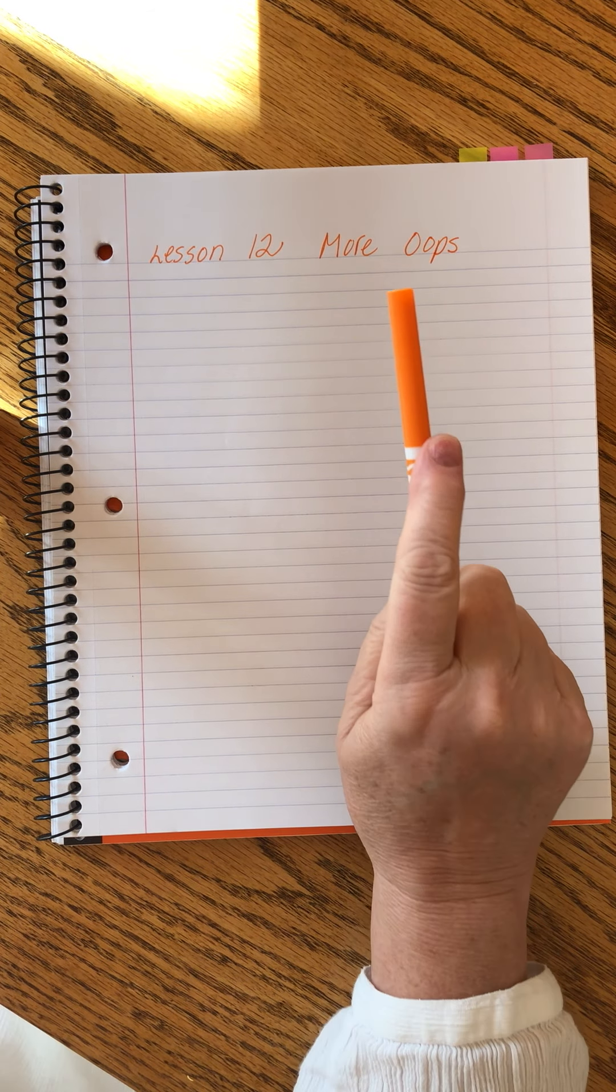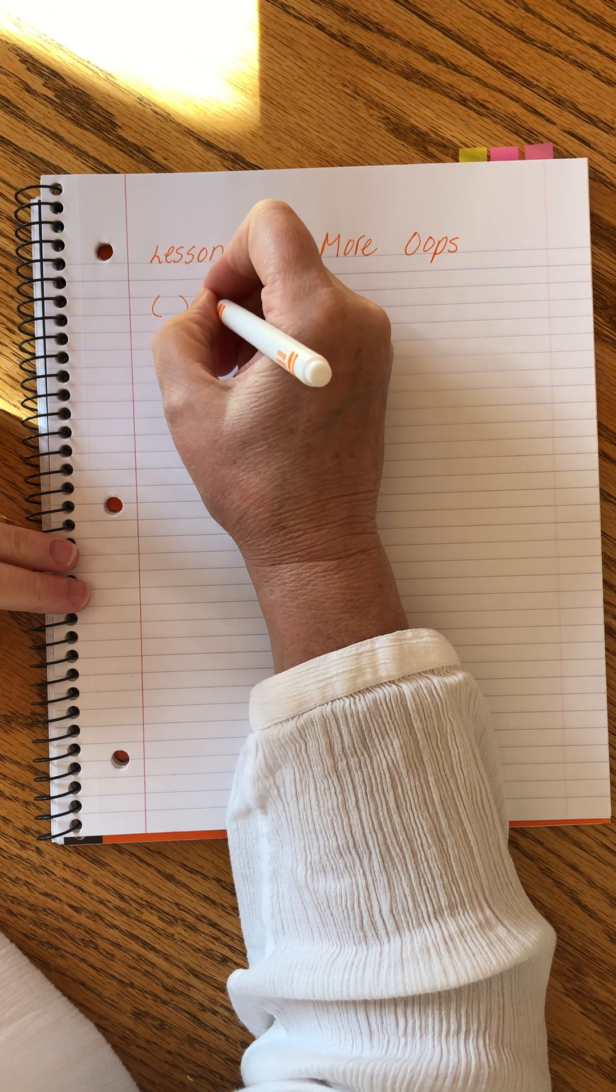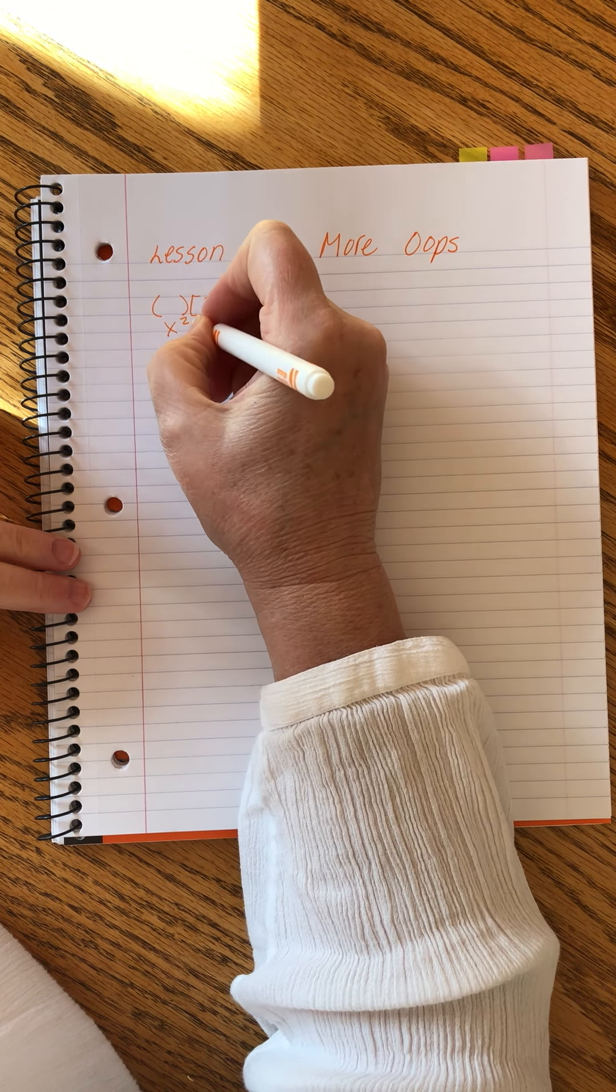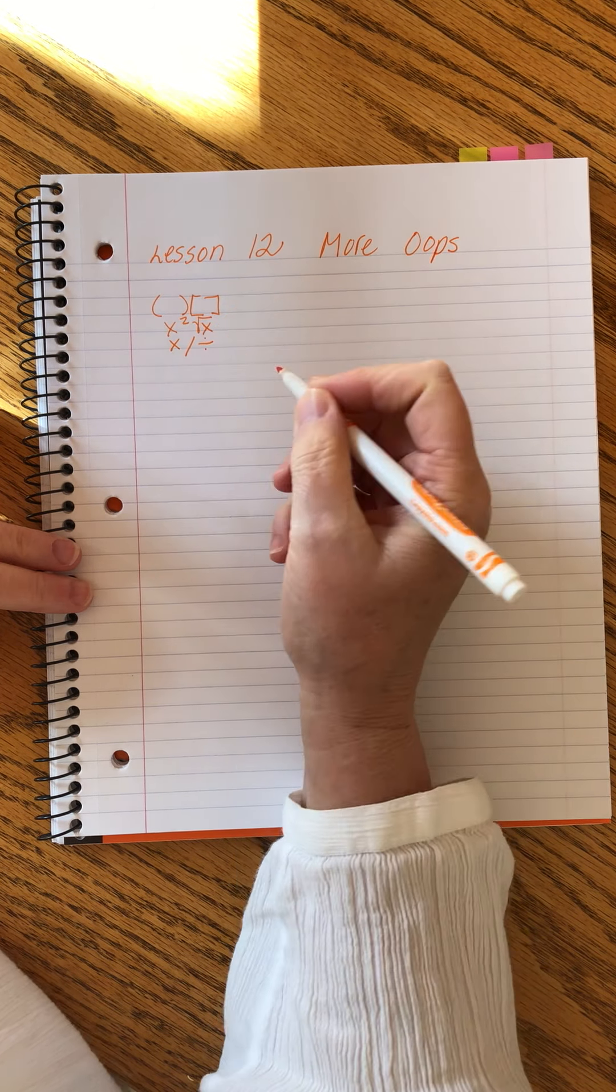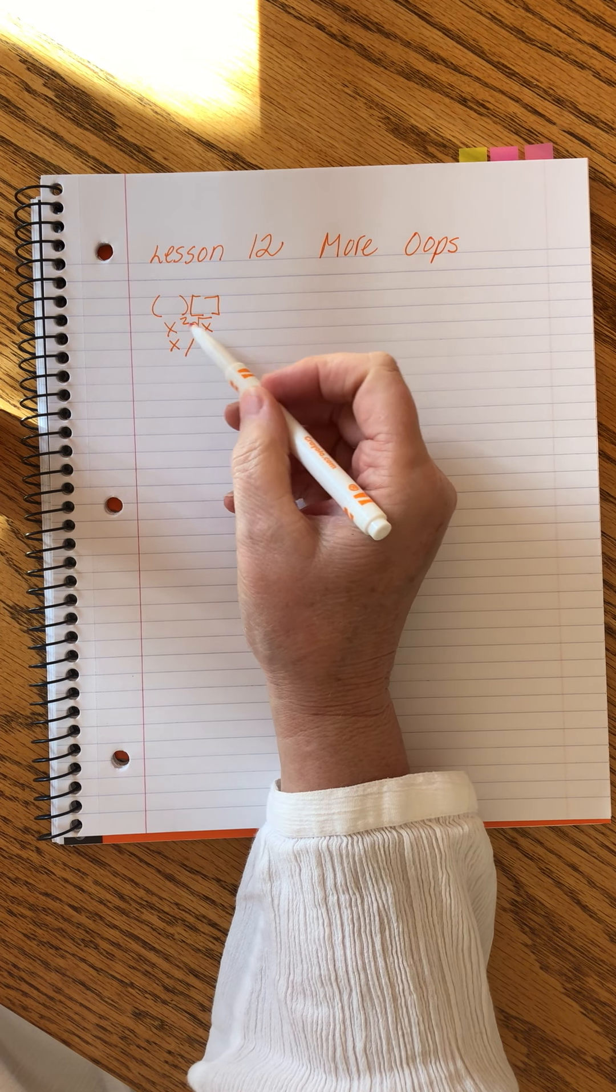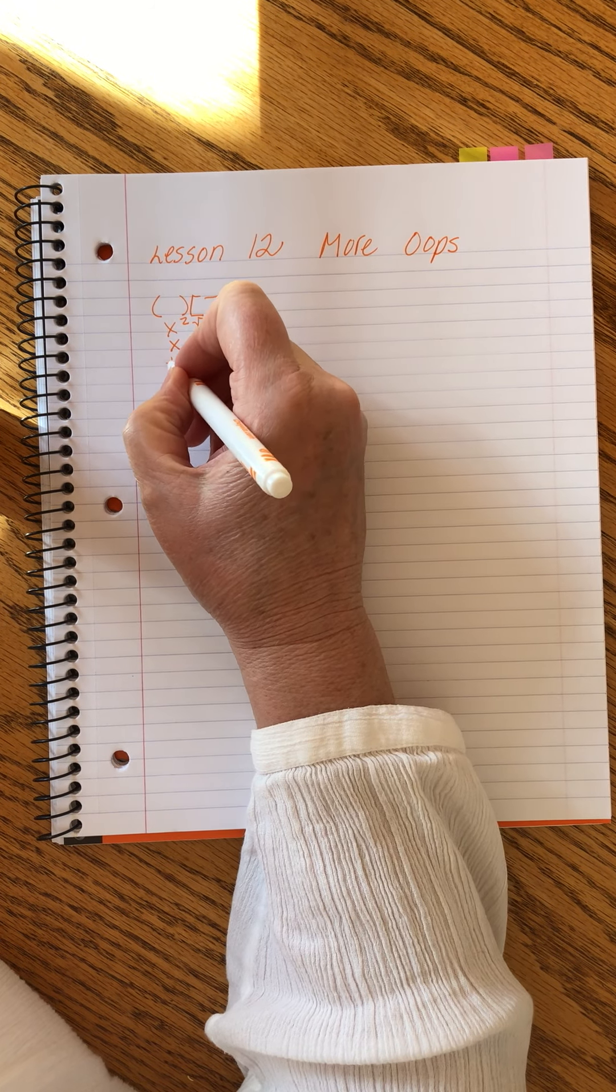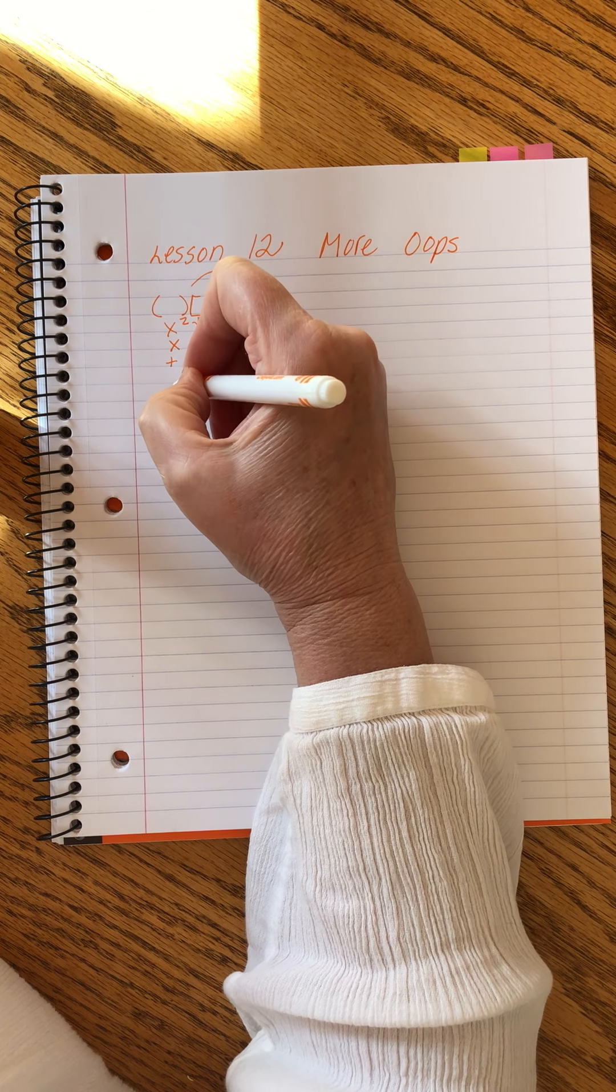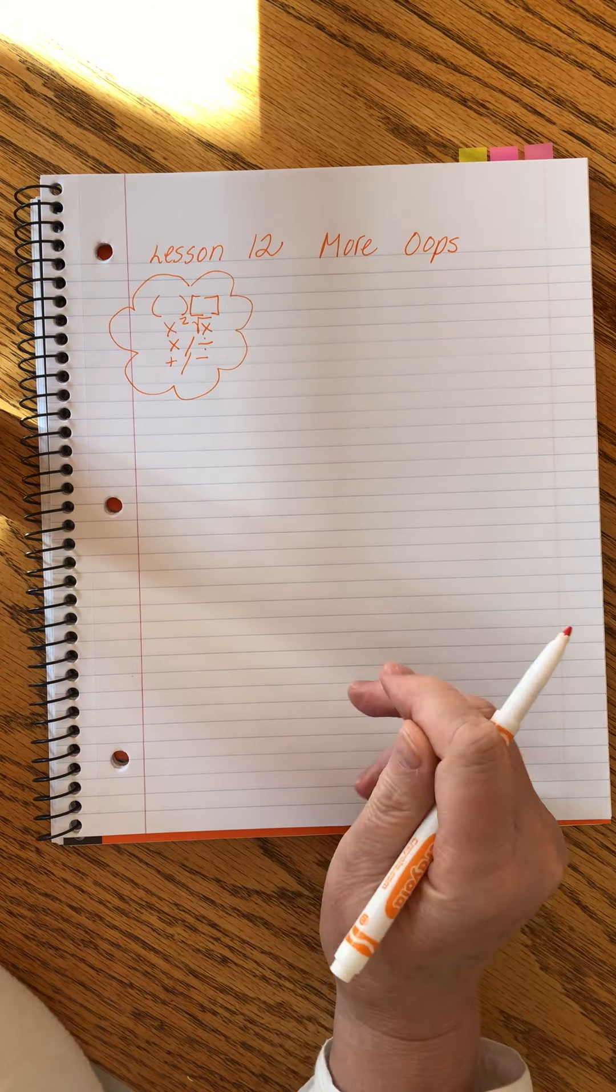We started talking about order of operations last time. We remembered that it goes like this: symbols of inclusions, powers and roots, multiplication and division - and I always give you the reminder that here X stands in for a number, here X means multiplication. There are two different kinds of X's, which is a little confusing. And then the last thing we do is add or subtract.